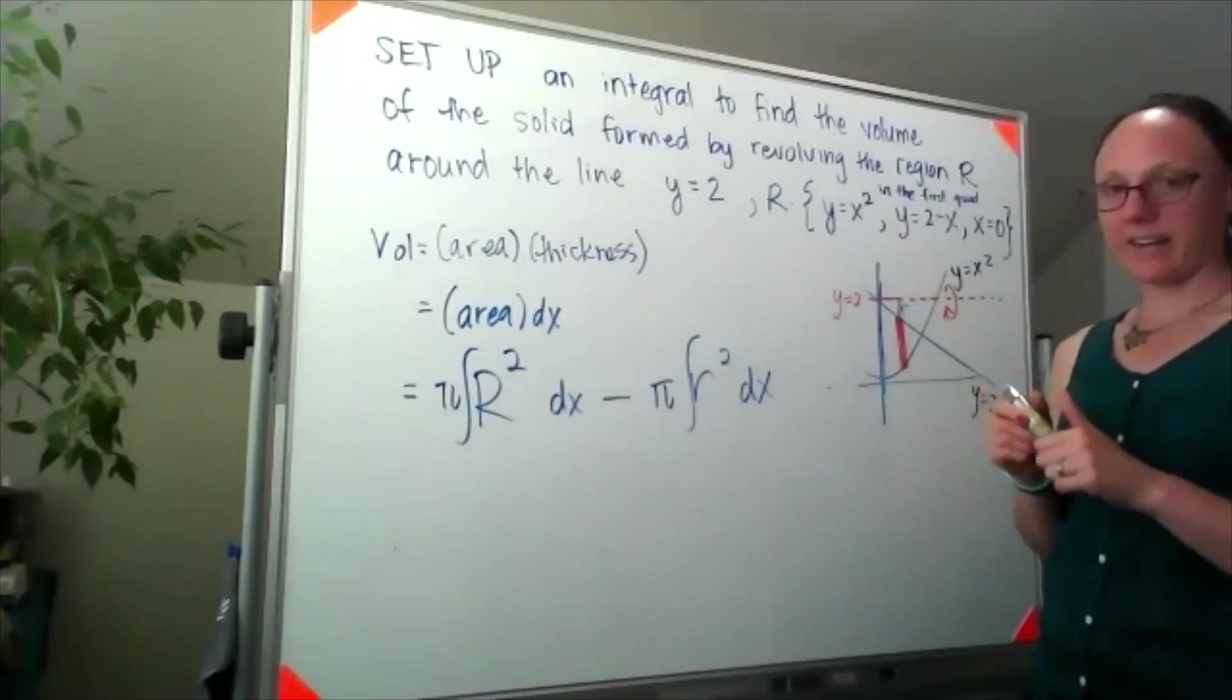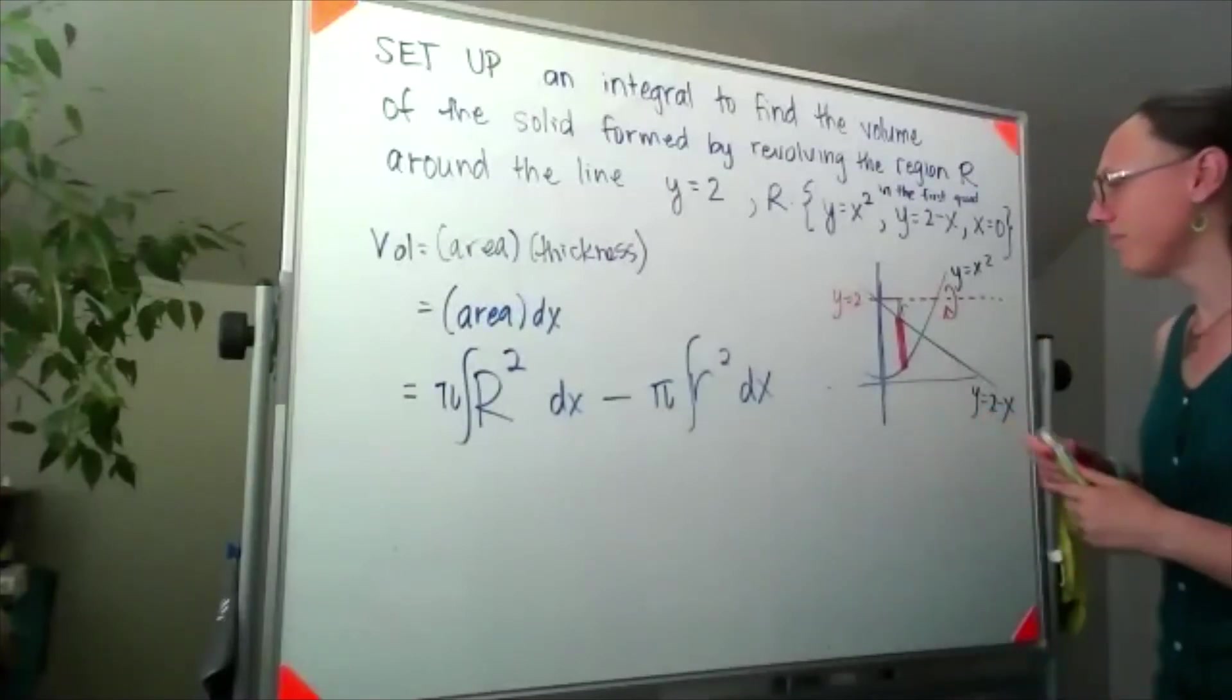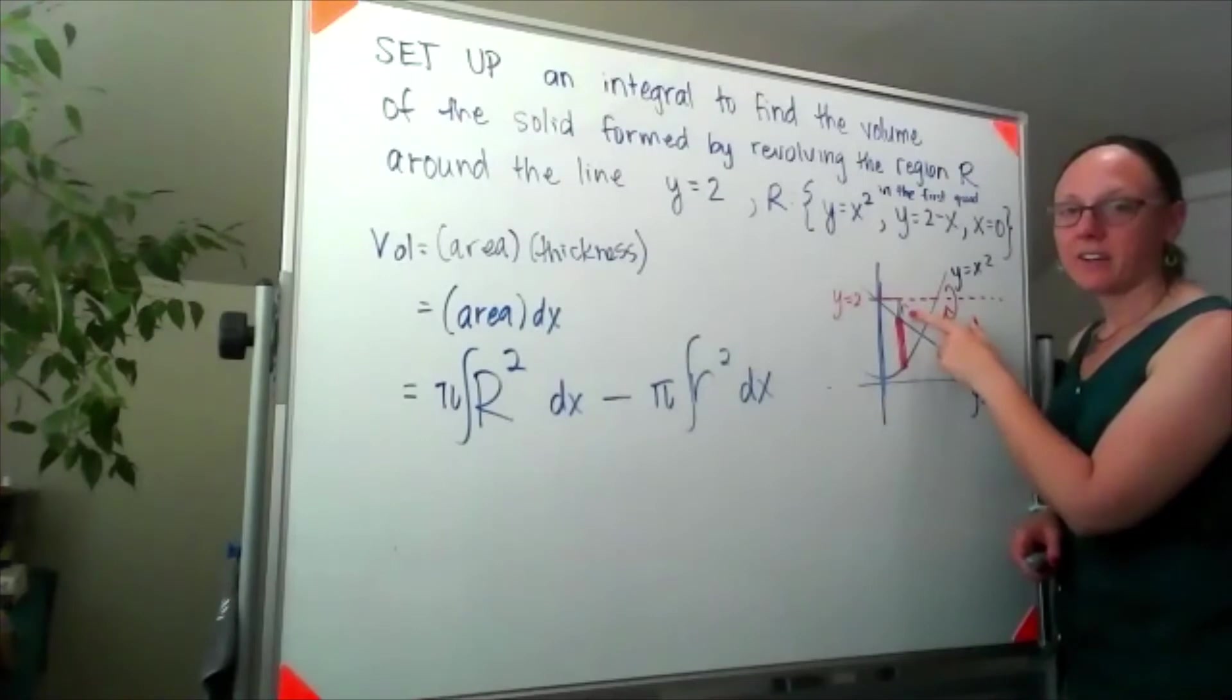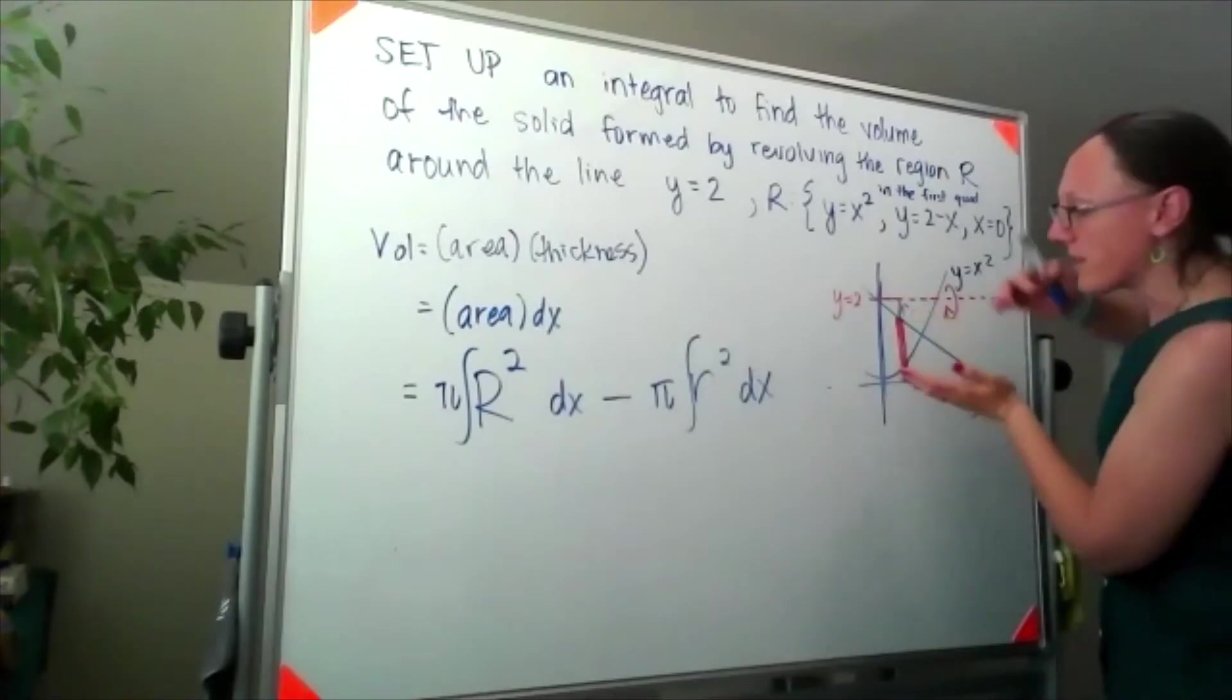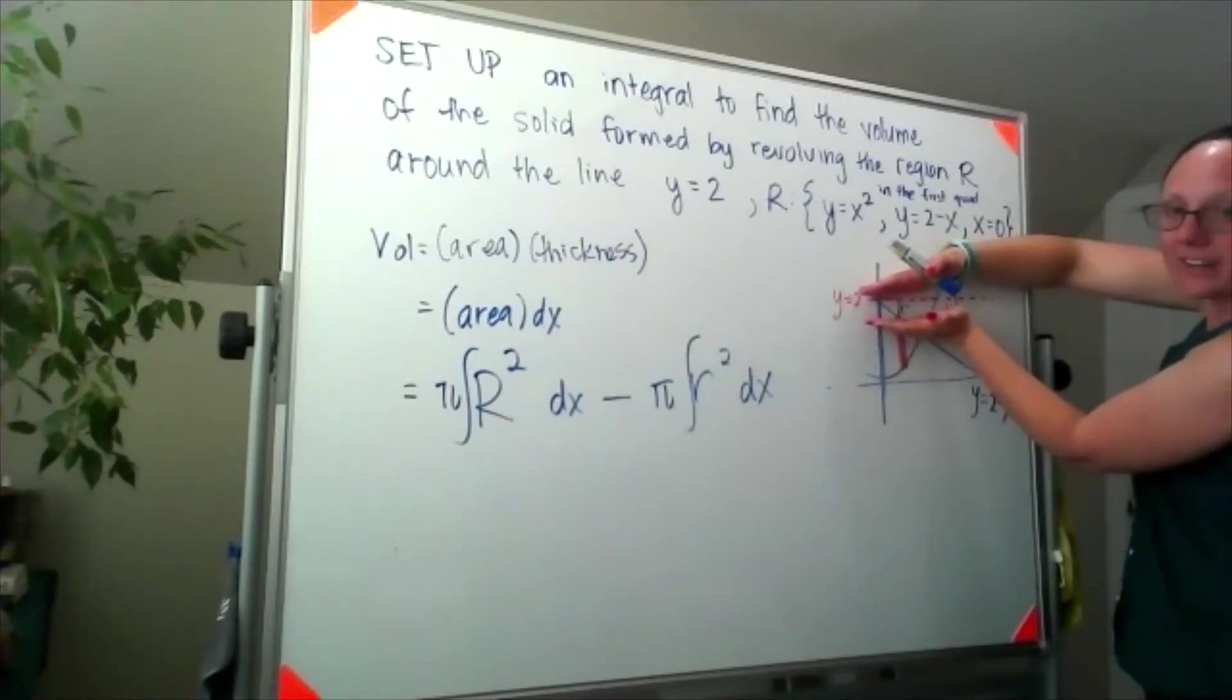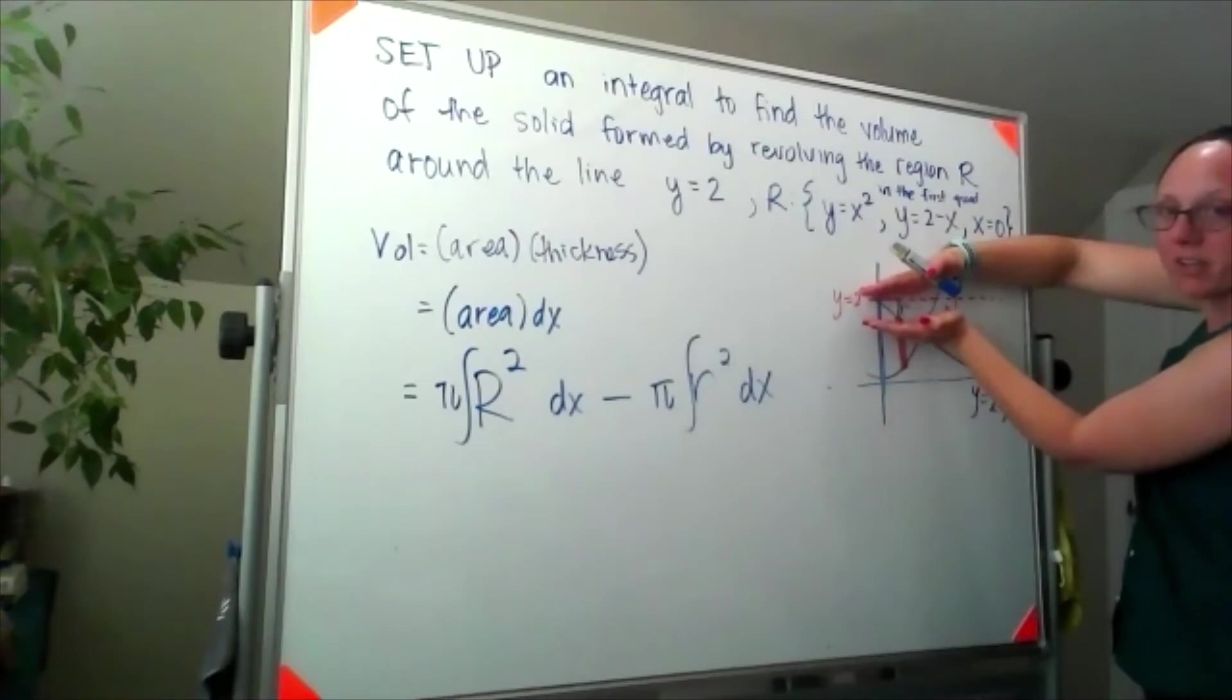So that distance right there is my little radius, that distance right there. Well, to find that, I actually need to notice that this entire height is y equals 2, and to get that little height that I'm looking for, I'm taking the y equals 2 and subtracting off the y value from the line.